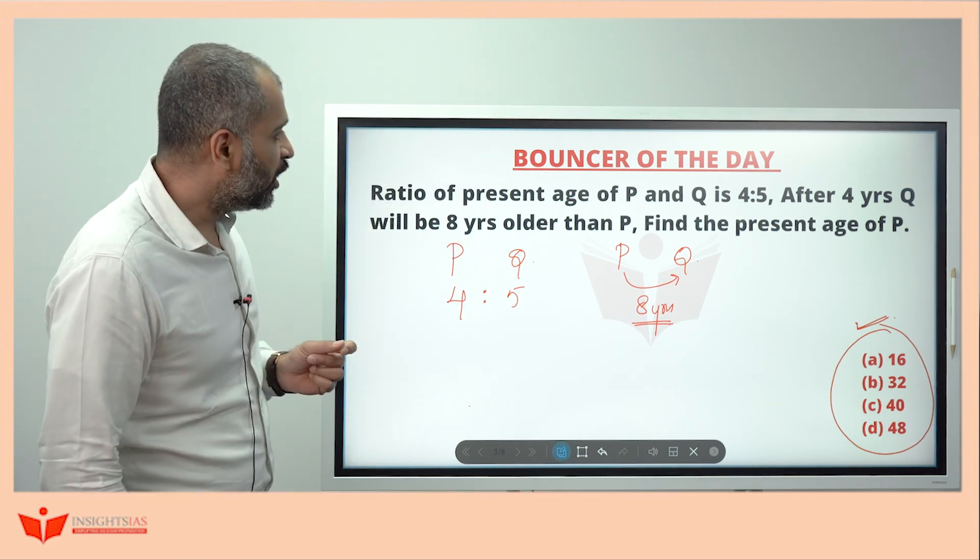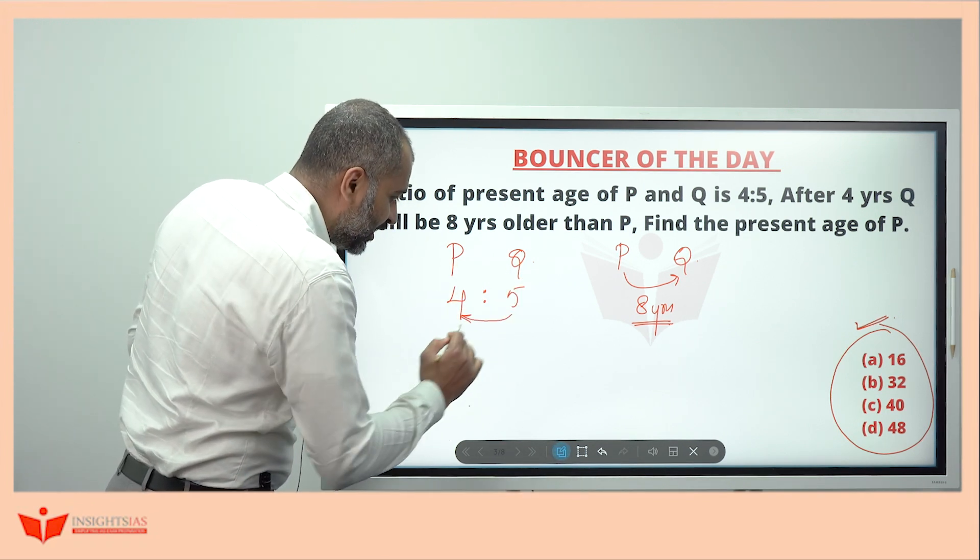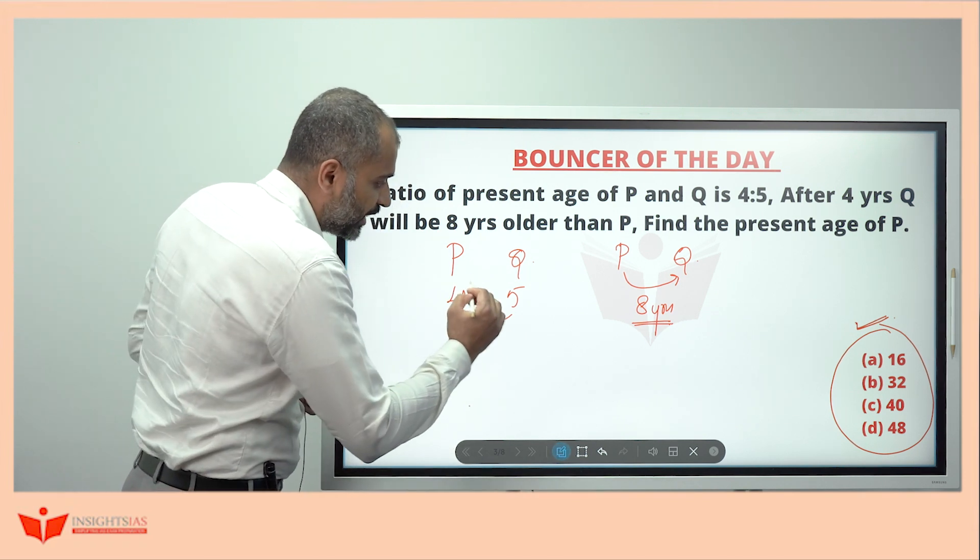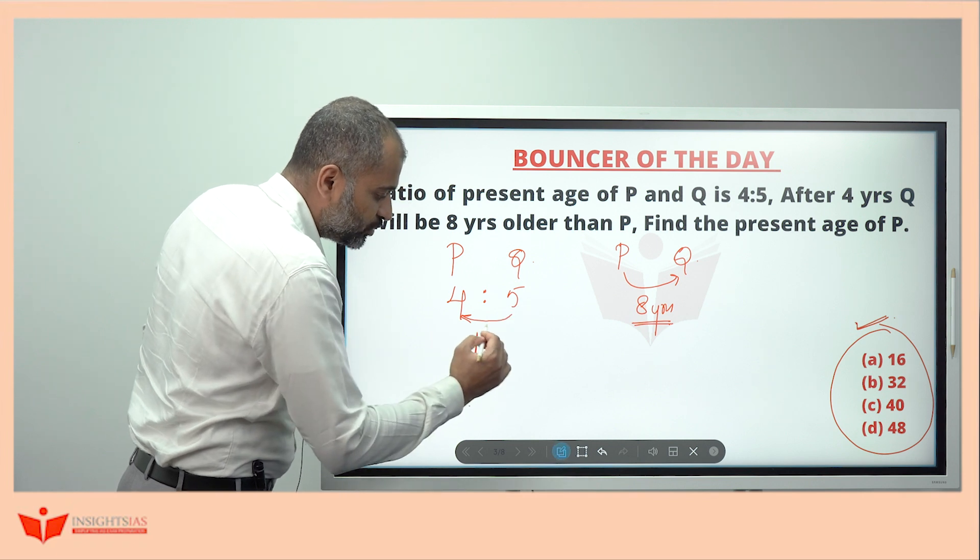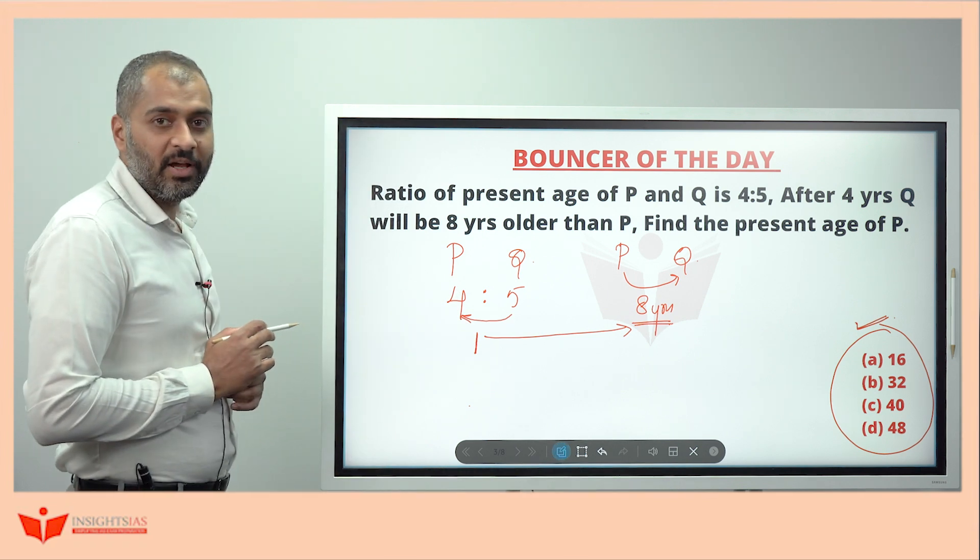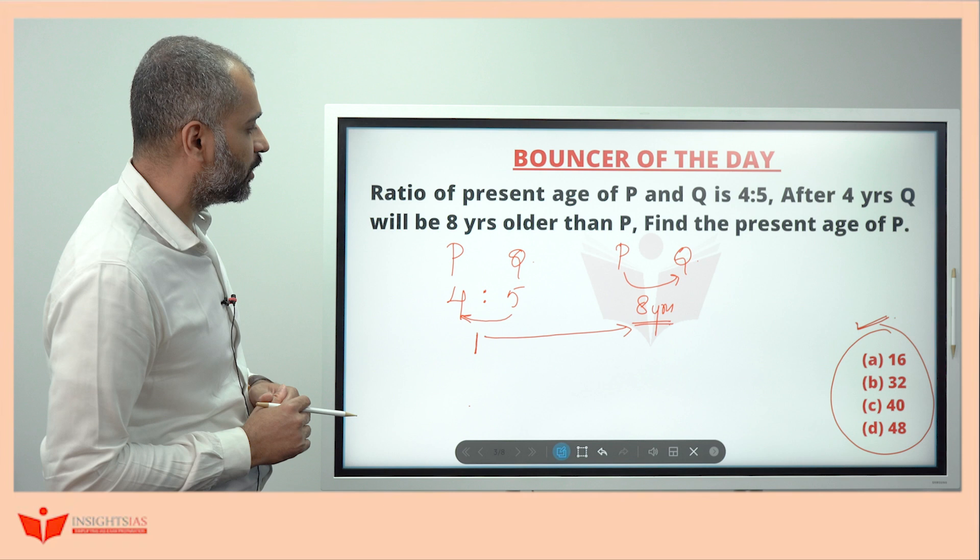Whatever you are seeing here, P and Q, whatever the ratio you are seeing here, you are seeing a difference of 1 unit. Or else, you can take this as 4X, 5X. Difference between these two is 1X. And the difference between those two ages is nothing but 8 years. Simple one, directly, orally also you can solve this one.